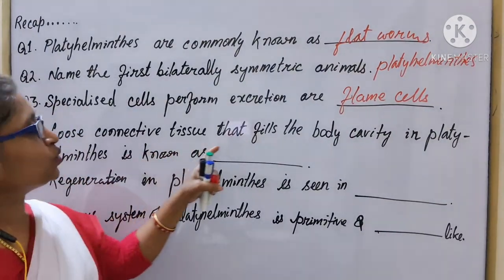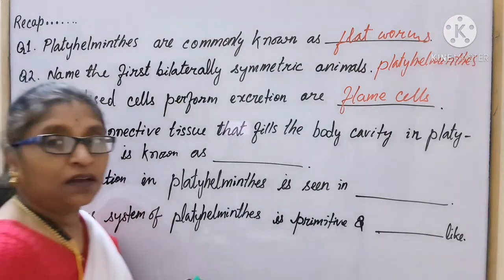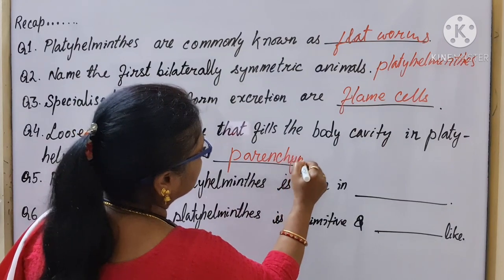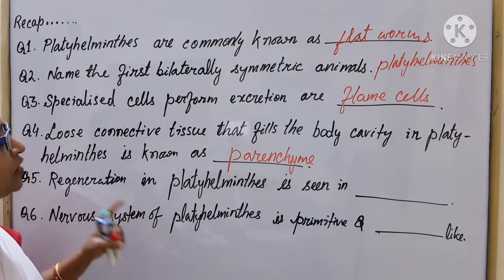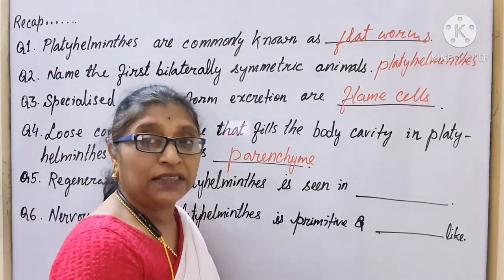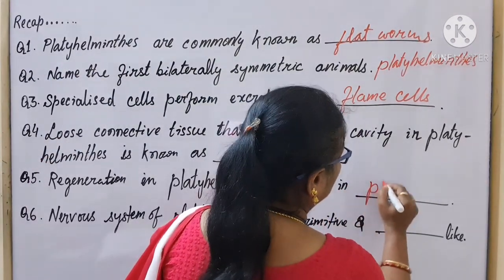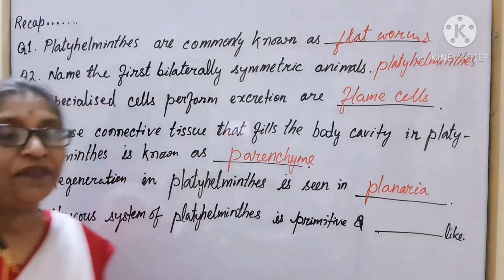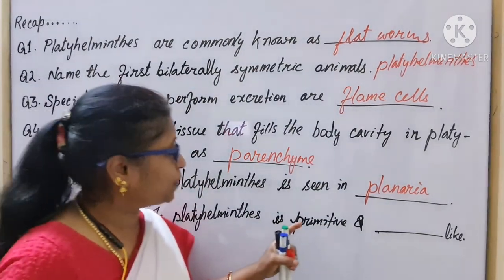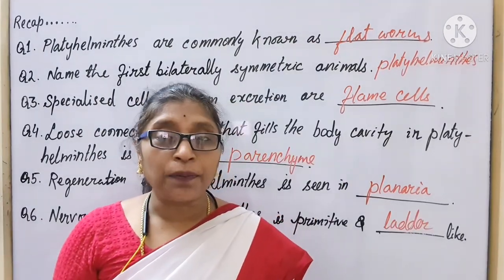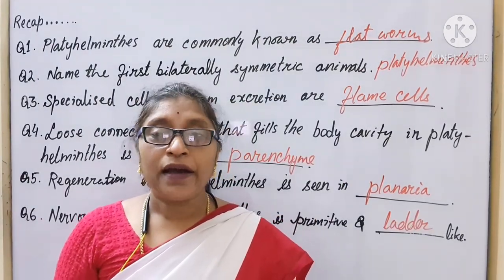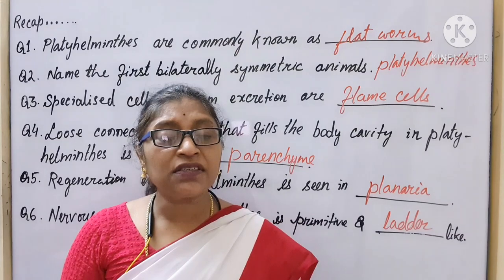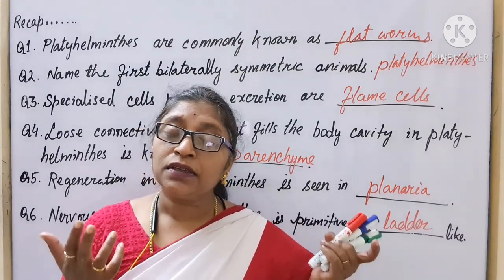Loose connective tissue that fills the body cavity in Platyhelminthes is known as parenchyme. Regeneration in Platyhelminthes is commonly seen in Planaria, belonging to class Turbellaria. These are free-living organisms. The nervous system of Platyhelminthes is primitive and ladder-like. The animals of class Trematoda and Cestoda are parasitic in nature and these animals are commonly known as flat worms.